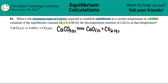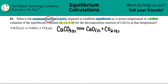First, I like to look back at the question to see what equilibrium information they gave me. They're asking for the minimum mass of CaCO3. They're asking for a mass value, and remember, mass is in grams. So at the end of the day, we need to find the grams of CaCO3. That's the endgame.